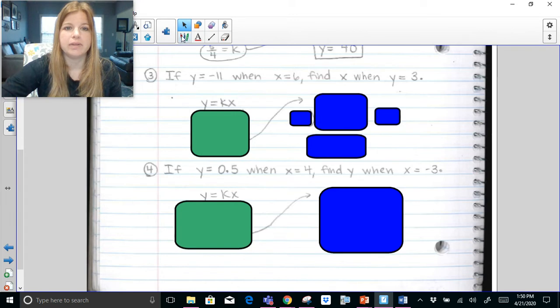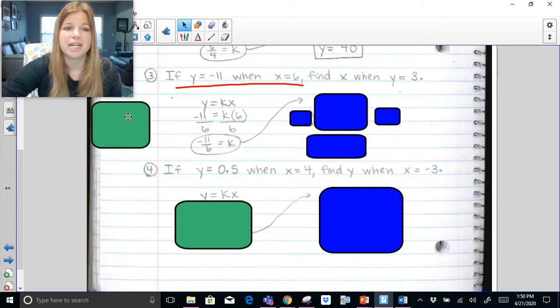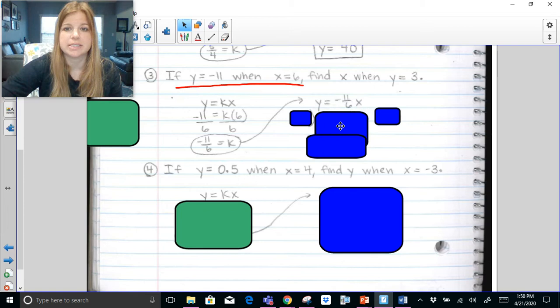If y equals negative 11 when x equals 6. So if y equals negative 11 when x equals 6, I'm going to plug in negative 11 for y. x is 6. I want to solve for k. Divide both sides by 6. I'm going to leave it as this simplified and proper fraction negative 11 sixths. Now I'm going to be able to do my second part.